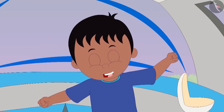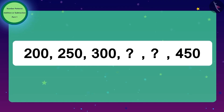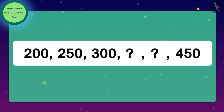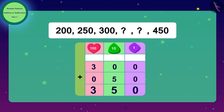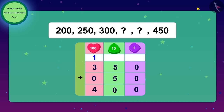Raju started dancing happily — he got the pattern! Children, have you also got the pattern of these numbers? To get the next number, you have to add 50 to every number. To get the number after 300, we add 50 to 300, giving us 350. And to get the next number after 350, we add 50 again to get 400.